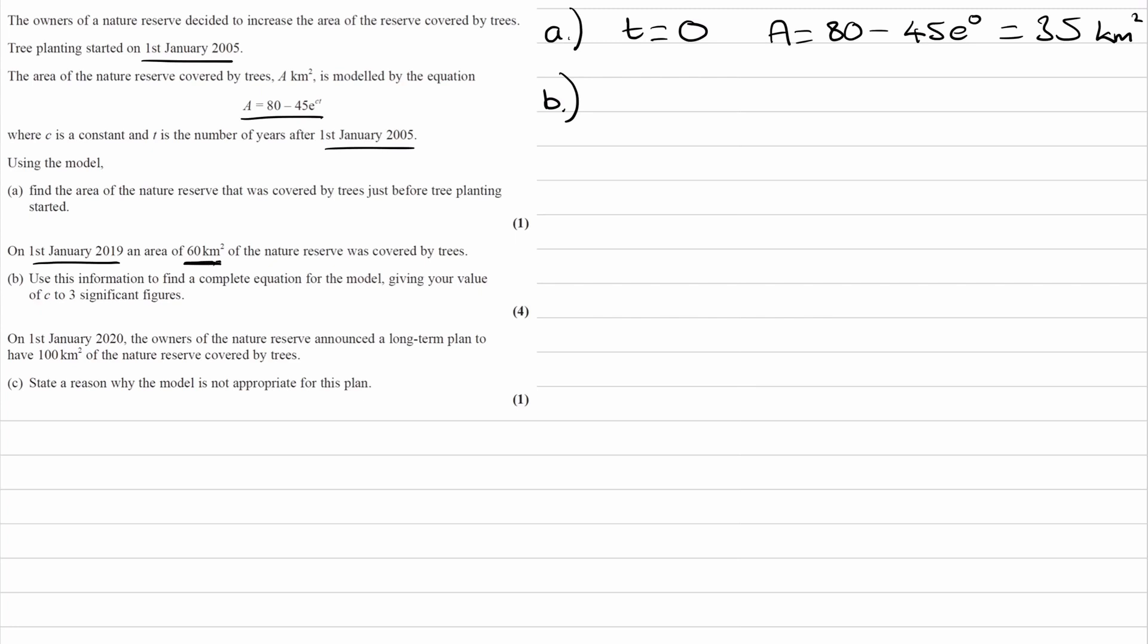We already have an equation for the model: A = 80 - 45e^(Ct). It's incomplete because we don't know what C is. That's what we're trying to work out. We have to use this information to find C. We want to convert these two things into numbers that we can put into the equation and rearrange for C. The area would be 60, which is straightforward - it has the same units. We don't need to do any conversion.